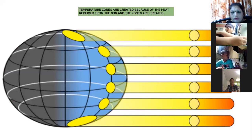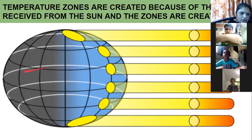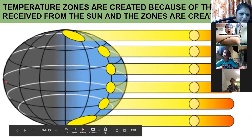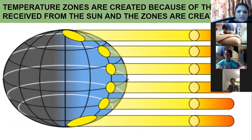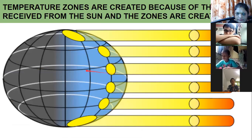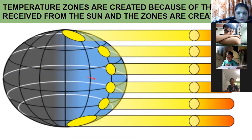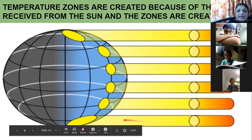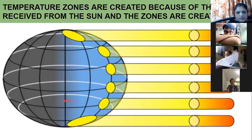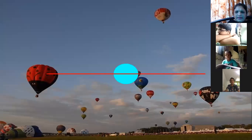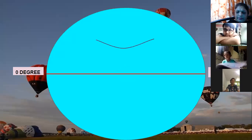I explained how the rays of the sun fall on the earth. Near the equator, the rays of the sun are perpendicular, and near the poles, the rays of the sun are slanting. That means the heat received near the equator is more and near the poles is less. Temperature zones are created on the earth because of the heat received from the sun.